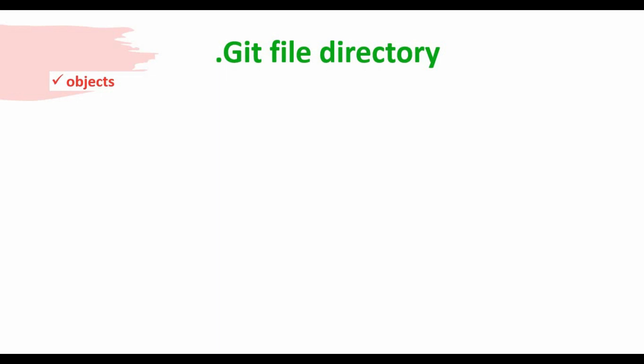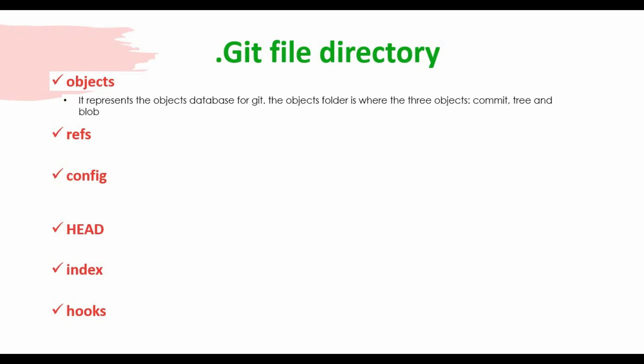Now let's open this folder. You can see the folders we spoke about: hooks, objects, info, refs, config, description, and head. You don't see index here because index is created only when you make any staging or commit — when files are added to the staging area, that will be stored in the index. Now let's talk about what each folder does. The objects folder represents the object database for Git — all three object types (commit, tree, and blob) will be stored there. The refs folder is where information about tags and branches you create from a repository is stored.